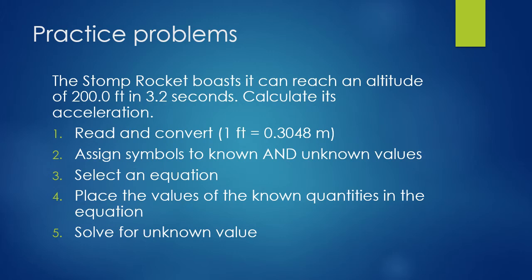Here's another problem: a stomp rocket boasts it can reach an altitude of 200 feet in 3.2 seconds. Calculate its acceleration. A stomp rocket is a kid's toy — a foam rocket on a launcher that you stomp on a pump, sending air through a tube to launch the rocket. Approach this like the other problem: convert if necessary, assign symbols to known and unknown values, pick an equation based on the type of problem, and solve.